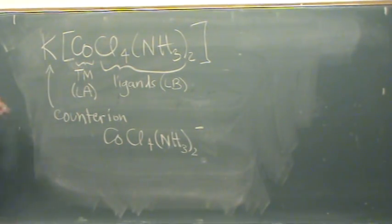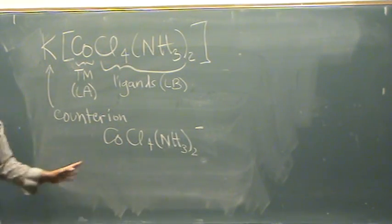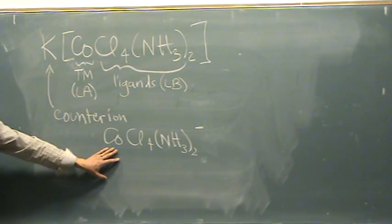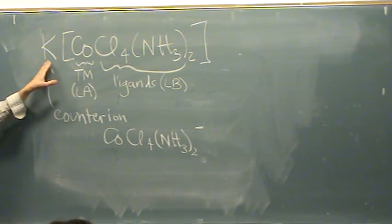Minus one, because potassium is plus one, so everything in the brackets is minus one. And so here the counter ion is not drawn. Here the counter ion is drawn.